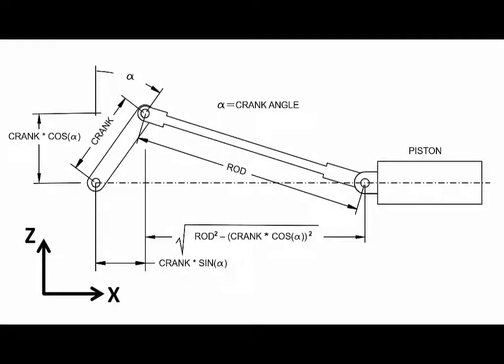Let's take a look at the geometry of the slider crank mechanism and the math involved. We have three components in the system: a crank, a rod, and a piston. What we want to determine is an expression that will tell us the distance from the pivot point of the crank to the pivot point of the piston.